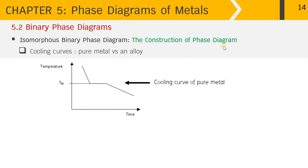Let's start with the construction of the phase diagram. First, I'll remind you of the cooling curve of a pure metal. Starting above the melting point in the liquid state, the curve comes down as the melt cools. Once reaching the melting point, the temperature remains constant as the metal transforms from liquid to solid. After solidification is complete, the temperature of the solid metal reduces to room temperature.